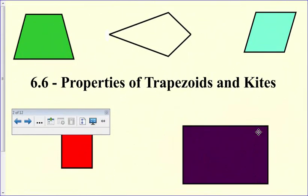Alright, today we are talking about the cousins of the parallelogram family. They're the trapezoids and kites.